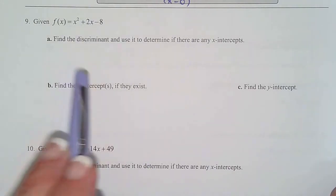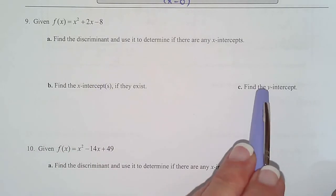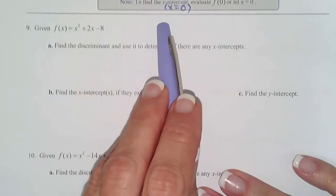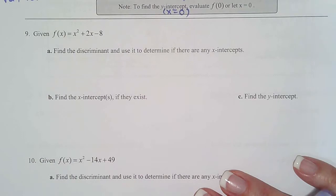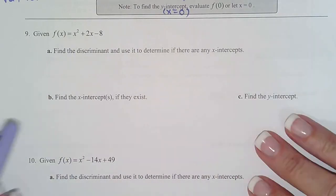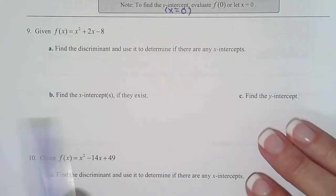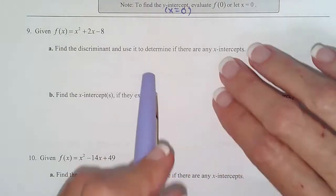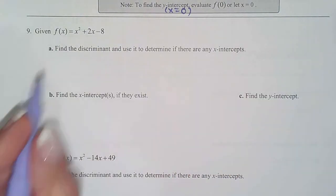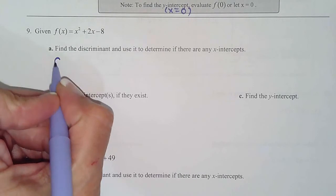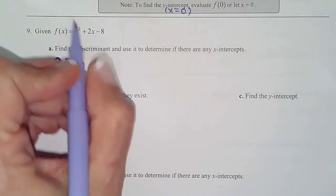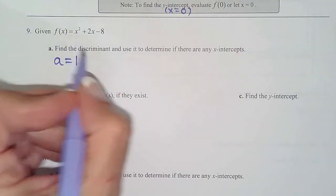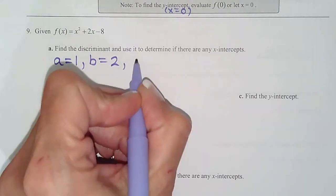So solve that. That finds the x-intercepts. For the y-intercept, like we wrote above, that means make x zero. So put your zeros in. And then we can start seeing the graph come together. Because if you have two x-intercepts on a graph and a y-intercept, you can kind of start drawing the picture. So find the discriminant. We do the same thing we did in the last section. a is 1, b is 2, c is negative 8.